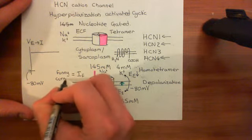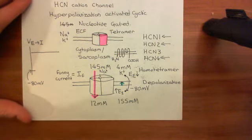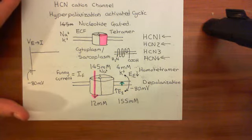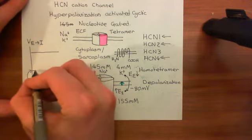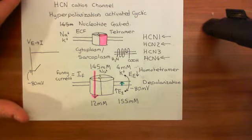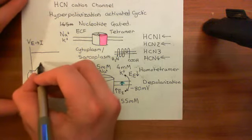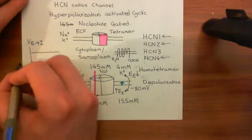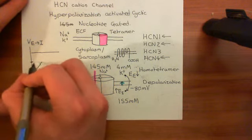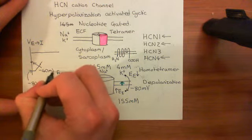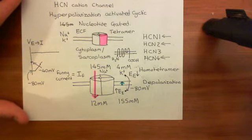When people first saw this, they thought it was really odd, so they called it the funny current - now we know it's through these HCN channels. On our graph, you see a gradual depolarization of the electrical potential difference across the membrane. When this rises to the threshold potential for the activation of voltage-gated ion channels at around negative 40 millivolts, those voltage-gated ion channels will open and cause the action potential.